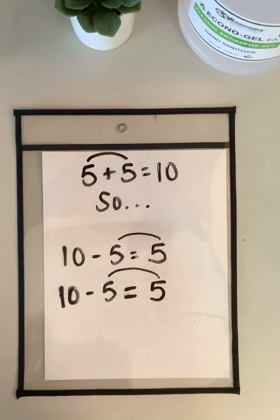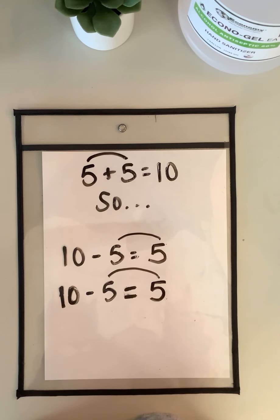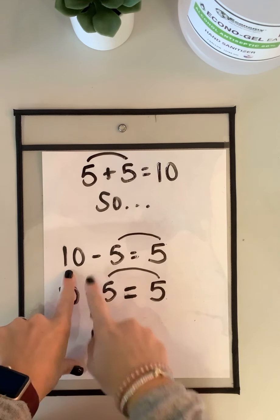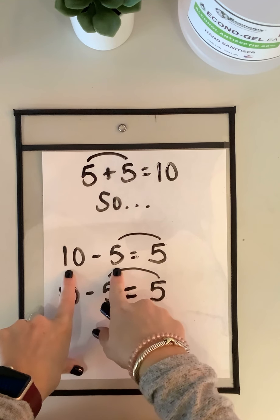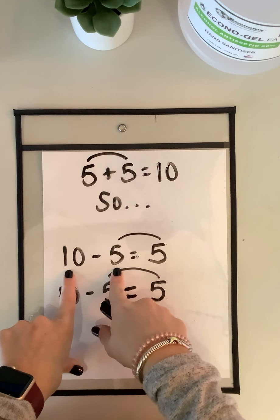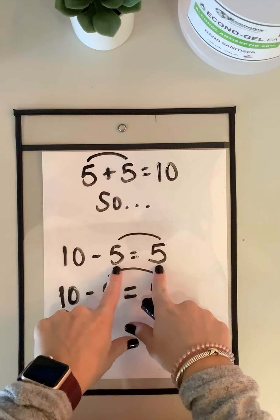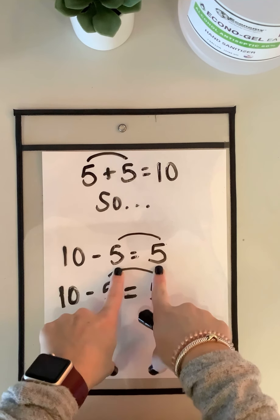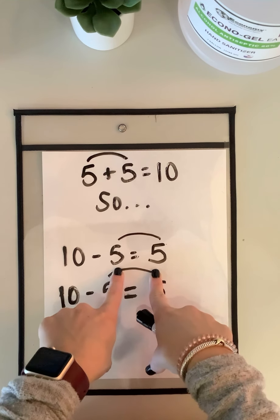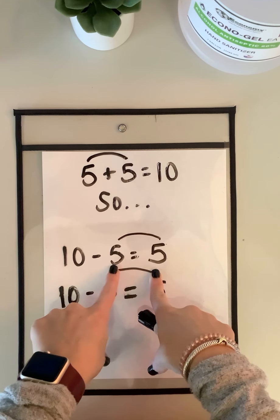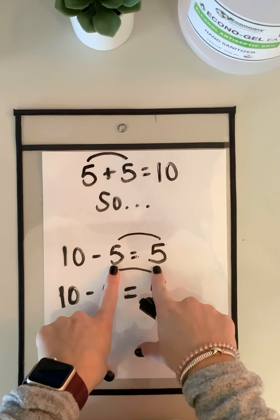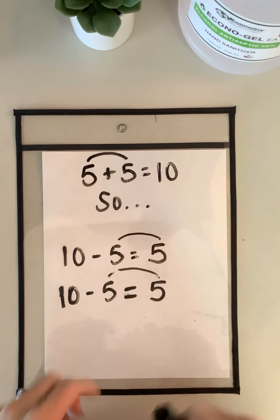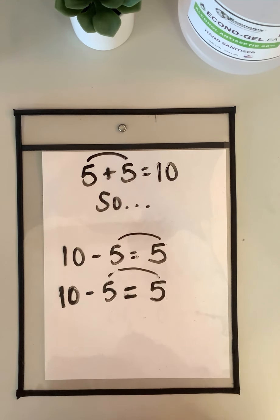So today we learned the strategy subtraction 10 partners. Any time you have 10 and you're subtracting a one-digit number from it, it's always going to equal your 10's partner. 5 and 5 are 10's partners, so any time I'm subtracting 5 from 10, it's always going to equal 5. Have fun practicing!